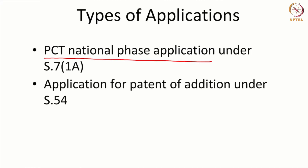The fifth type of application is an application for a patent of addition. If you already have an invention granted or filed in India and you have made some improvements and modifications to that existing invention, you can cover those improvements and modifications by way of a patent of addition. There is no need to file a fresh new application because it is just a modification or an improvement over an existing invention. The patent of addition allows you to cover improvements and modifications.